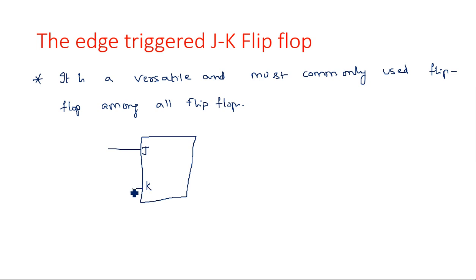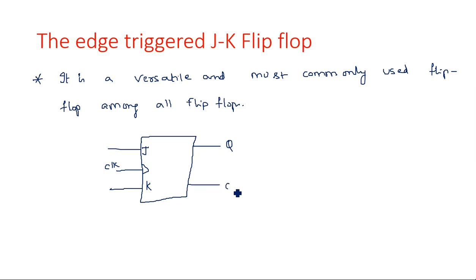It is a flip-flop so we also have the clock signal. This is the clock, and this is Q and this is Q-bar. As it is an edge triggered flip-flop, we need to show the edge as either positive edge or negative edge.